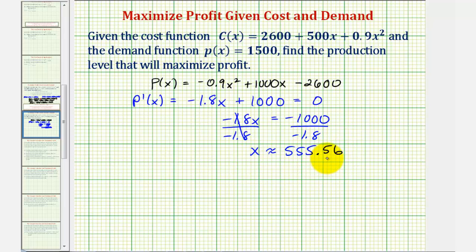So we only have one critical number, but we still should verify this value of x will maximize the profit, not minimize the profit. We probably recognize that the profit function is a quadratic where the leading coefficient is negative. So we have a parabola that opens down, and therefore the profit function is always concave down, verifying at this x value we would have a maximum.